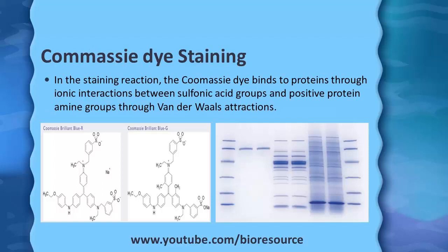The most commonly used dye staining method is the Coomassie dye staining. There are two forms of Coomassie Brilliant Blue: Coomassie Brilliant Blue R and Coomassie Brilliant Blue G. Both R-250 and G-250 can be used for protein staining, but most commonly Coomassie Brilliant Blue R-250 is used for staining SDS-PAGE gels.